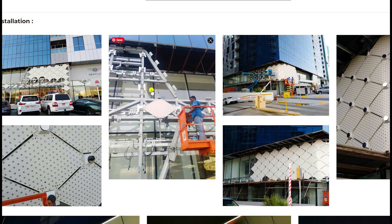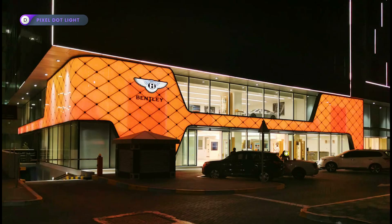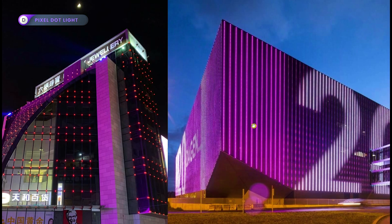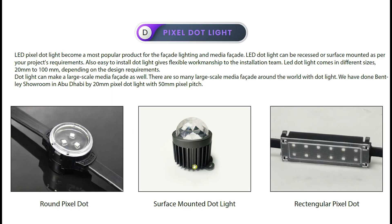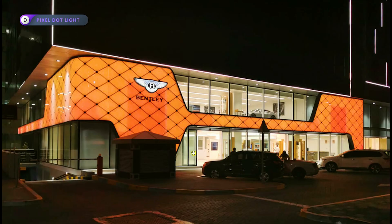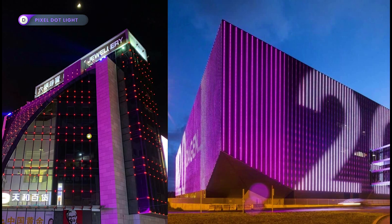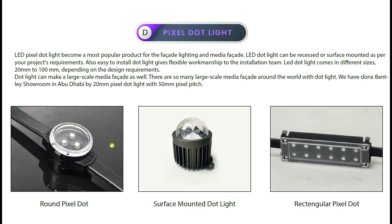This is how it's installed, and this is what we used for the project. Here is a project in China using surface mount pixel dot lights — these exact fittings. This type is individual and doesn't have cables connecting them, so from one pixel dot to another can be almost two to three meters apart. These are also pixel dot lights used for media, and you can create text or effects with this kind of light.